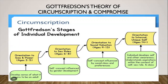Based on this theory, the first stage starts from ages three to five with the orientation to size and power. In this stage, children see things as one-sided or another side — black or white, yin or yang. During this stage, children start to recognize that jobs are held by people and not by animals or fantasy characters.